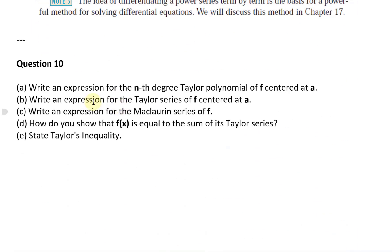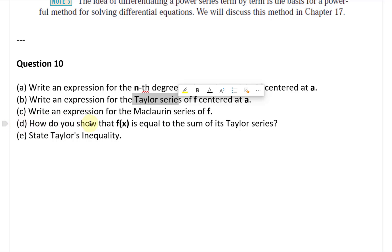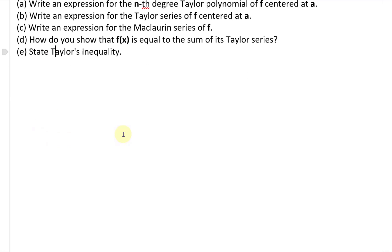Let's look at question 10. Part A states: write an expression for the nth degree Taylor polynomial of F centered at A. Part B states: write an expression for the Taylor series of F centered at A. Part C states: write an expression for the Maclaurin series of F. Part D states: how do you show that F of X is equal to the sum of its Taylor series? Part E states: state Taylor's inequality.